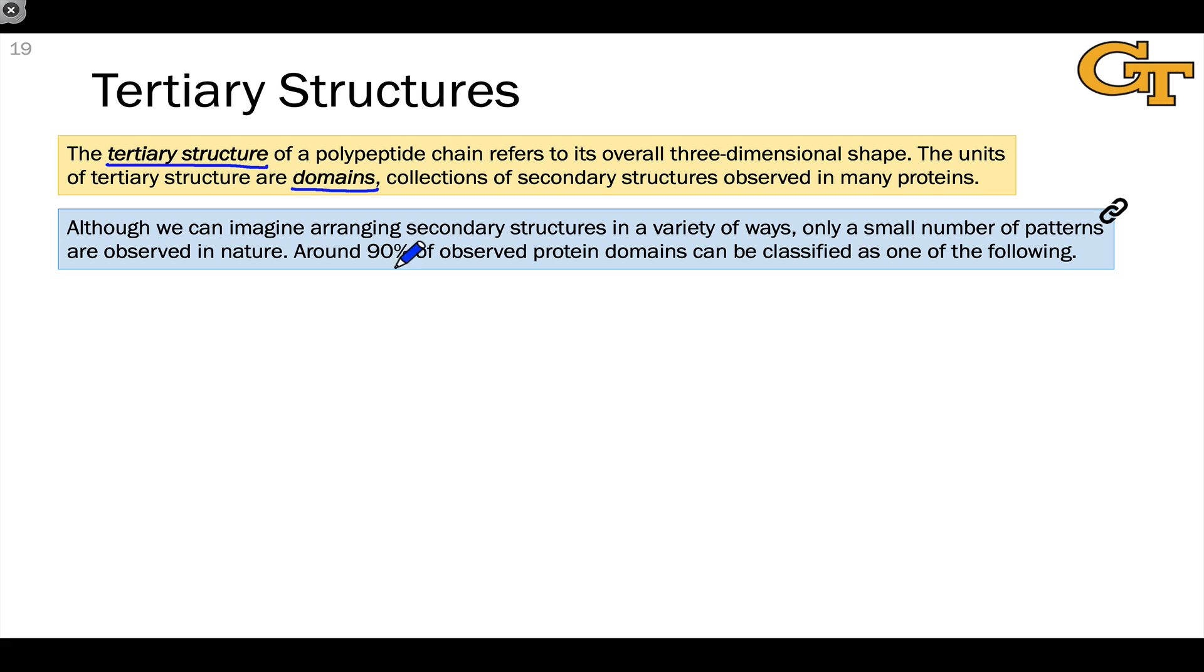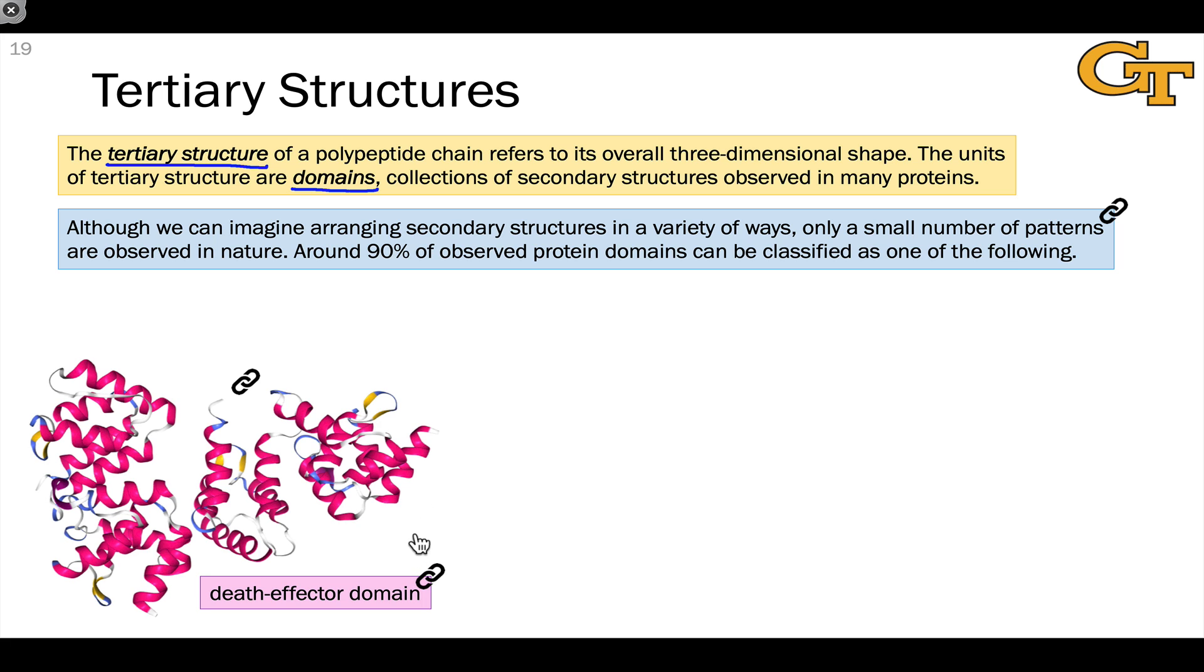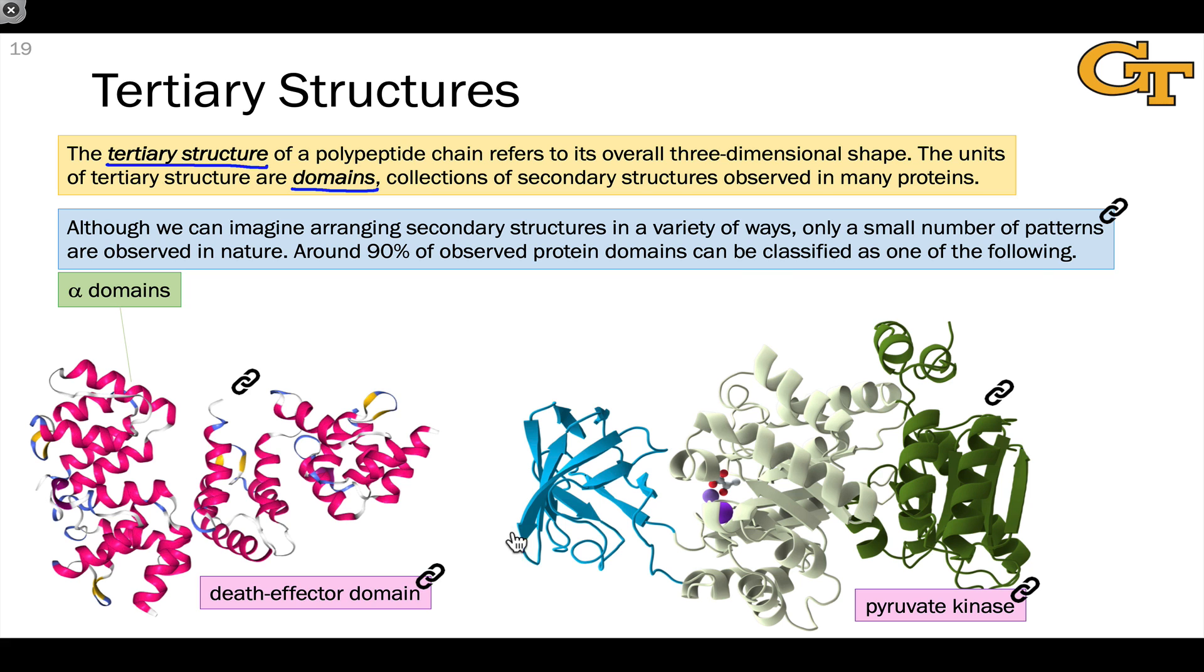Although we can imagine arranging helices and sheets in a huge variety of ways, a small number of patterns are observed in nature, and we can account for about 90% of observed protein domains as one of the following. The first class are essentially all alpha domains, and in the death effector domain whose structure we see right here, it's clear why this is called all alpha. This is all alpha helices clustered together like this. There are a number of different types of alpha domains that differ in how the helices are clustered together, but their key feature is that they include only alpha helices.